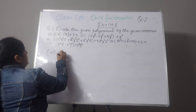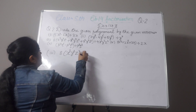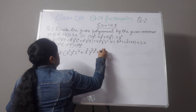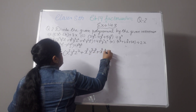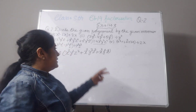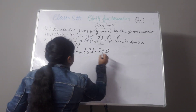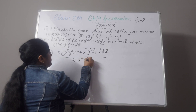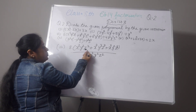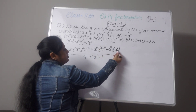Now the third part: 8x³y²z² plus x²y²z³, divided by 4x²y²z². I am writing 4x²y²z² directly as the denominator. Now look at the terms: the first has x³, y², z²; the second has x², y³, z²; the third has x², y², z³. We cannot cut directly.